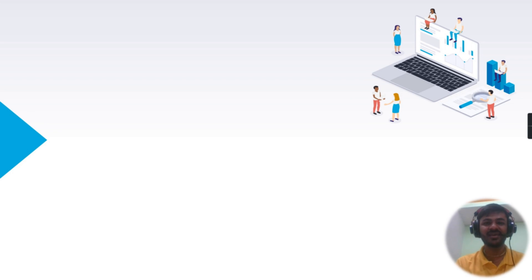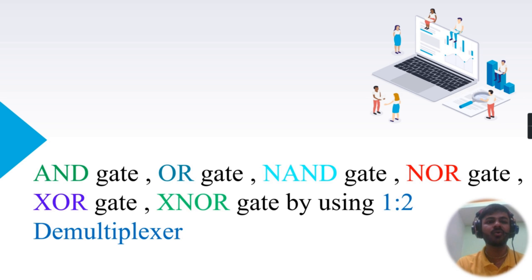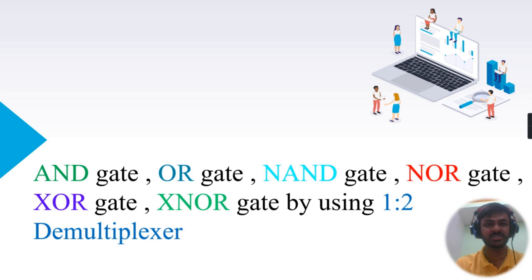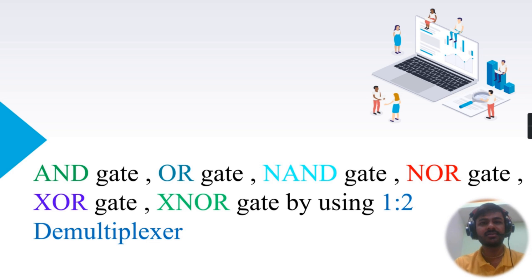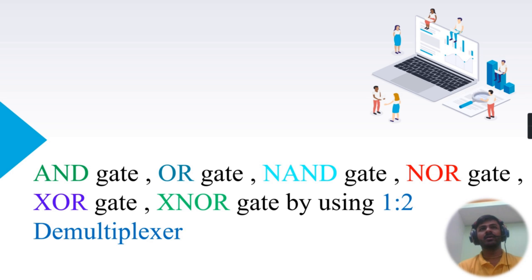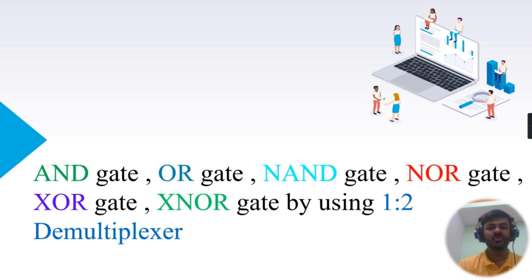Hello everyone, welcome to the channel TechnoSpot. This is me, Harish Gaupale. In this video, I'm going to tell you how we can implement all the basic logic gates — AND gate, OR gate, NAND gate, NOR gate, XOR gate, and XNOR gate — by using a 1-to-2 demultiplexer. We are going to use logical expressions of all the gates, the logical expression of the 1-to-2 demux, and some Boolean algebra laws.